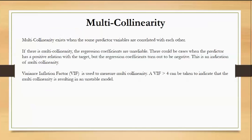Now we will move on. We will look at a few concepts in more detail. First one, multicollinearity. Multicollinearity exists when some predictor variables are correlated with each other. So if there is multicollinearity, the regression coefficients are unreliable. There could be cases where the predictor variable has a positive relation with the target but the regression coefficients turn out to be negative. This is an indication of multicollinearity.